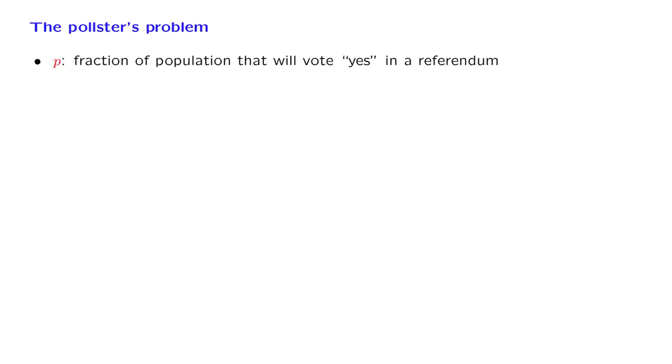There's a certain referendum that's going to take place. We're close enough to the day of the referendum so that voters have made up their minds. And there's a fraction p of the population that represents the voters that are going to vote yes. But the referendum has not yet taken place, and you want to predict or estimate what p actually is.